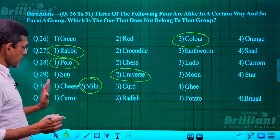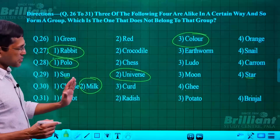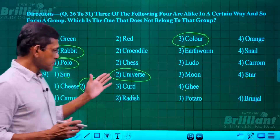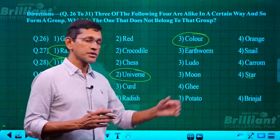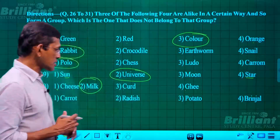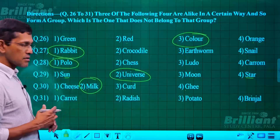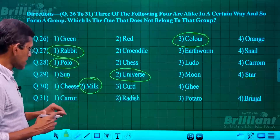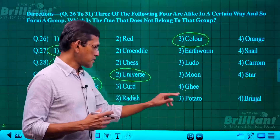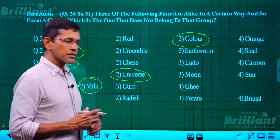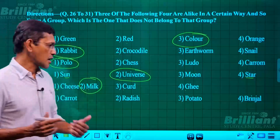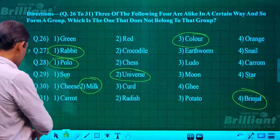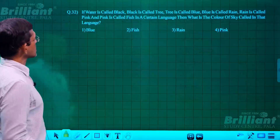Question 31: carrot, radish, potato, and brinjal. Carrot, radish, and potato all grow under the soil, but brinjal does not. So brinjal is the answer — it's different from the group.